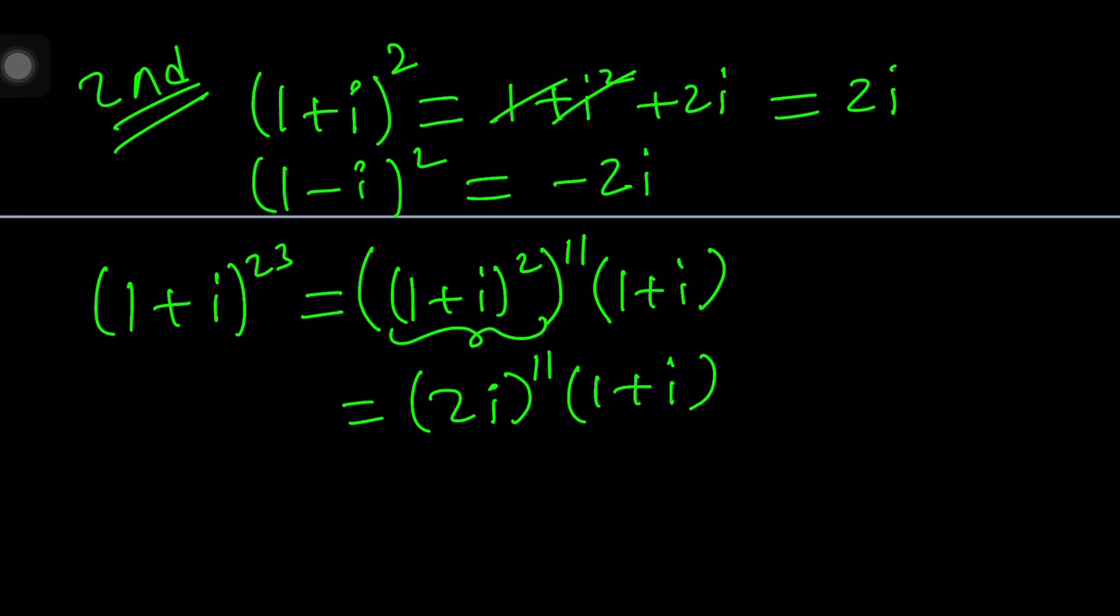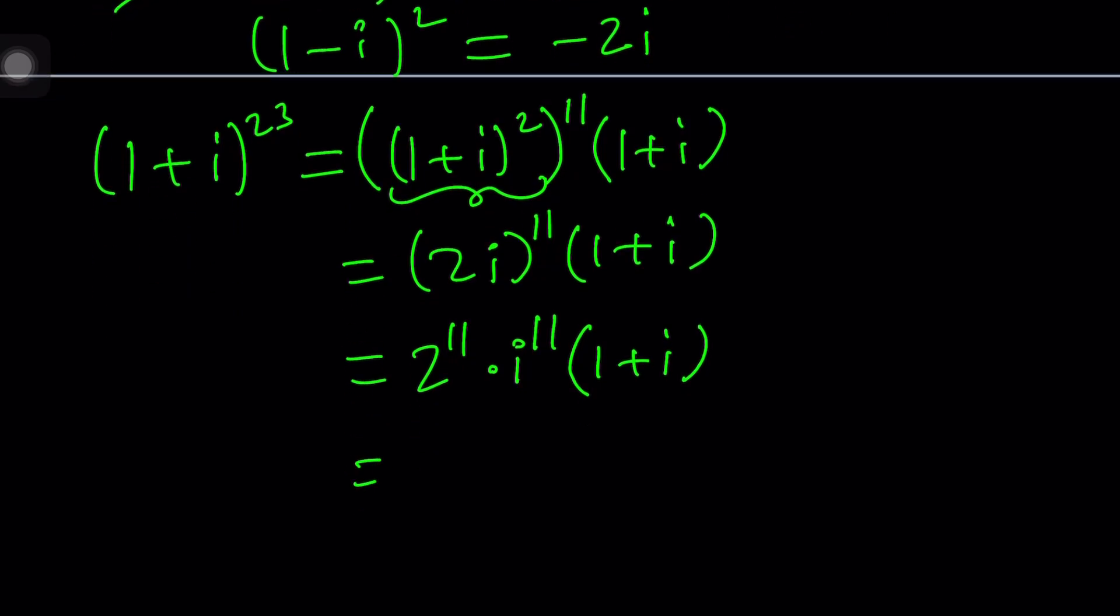What is 2i to the 11th power? You're going to raise it to the 11th power, so each factor is raised to the 11th power. This becomes 2 to the power 11 times i to the power 11 times (1 + i). 2 to the 11th power? Well, 2 to the 10th is 1024, so that should be 2048. i to the 11th is i cubed, which leaves a remainder of 3. And i cubed is negative i.